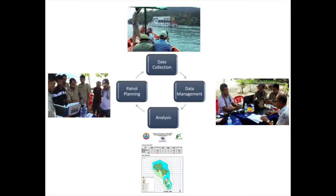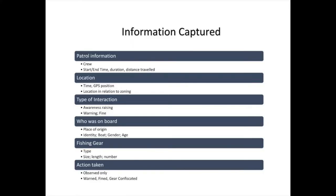This analysis ultimately allows you to plan future patrols based on the feedback you're getting — essentially using it in an adaptive management way. You can also use the analysis for monitoring and evaluation. The information captured includes simple patrol details, location, where people are in relation to zoning, whether inside or outside a specific zone, encounters with fishing boats or gear, the type of interaction, whether people were informed of rules or fined, people on board, types of fishing gear used, and the action taken.